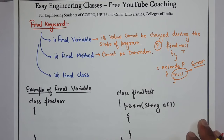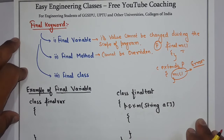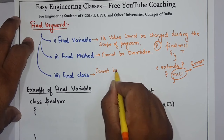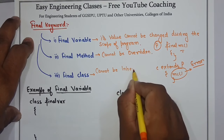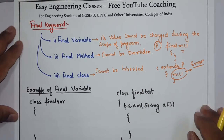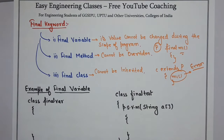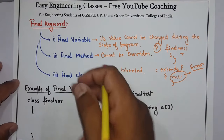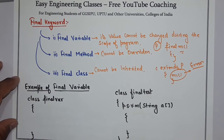The third use is a final class. A final class is a class which cannot be inherited. So if a question comes in your exam asking what is the use of the final keyword in Java, you have to explain all three uses of the final keyword with the help of examples. Now let's see examples of all three uses.